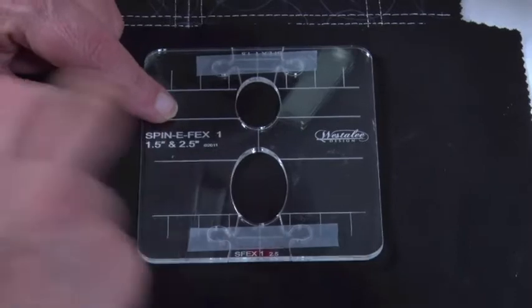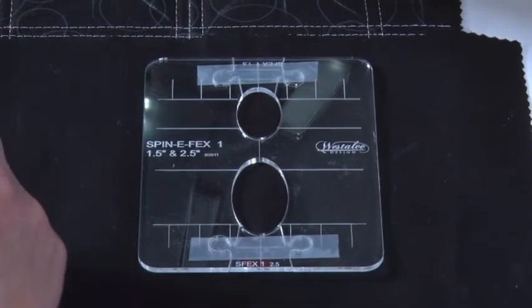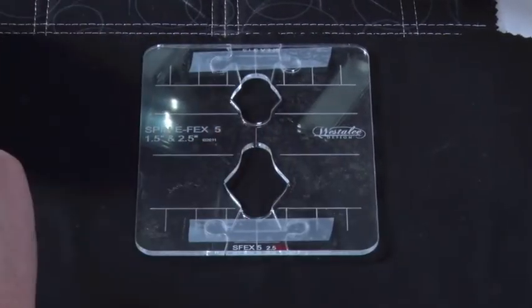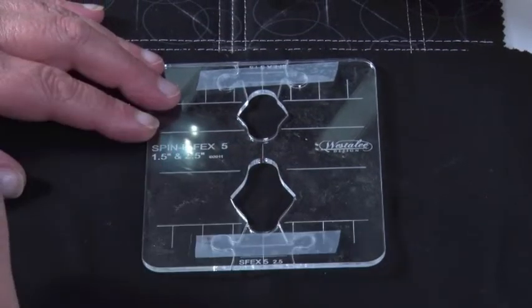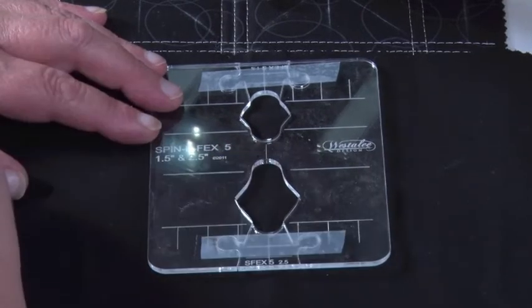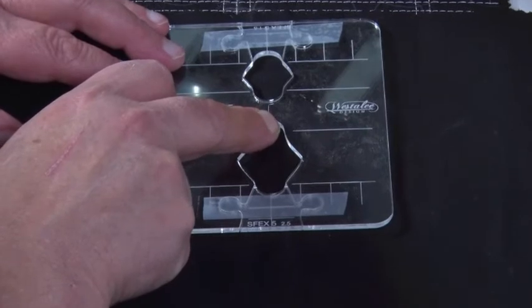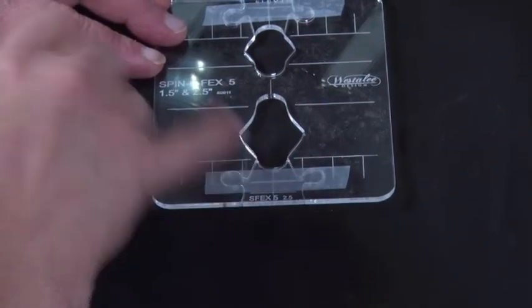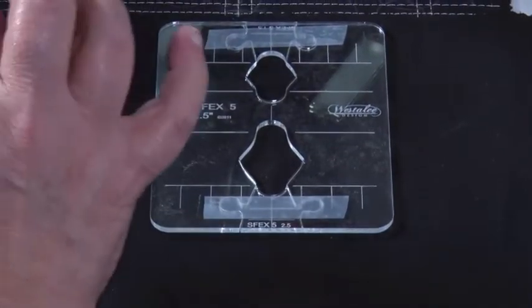This template is the same from top to bottom, but if we were using our spinifex number five, which we'll talk about later, this is a different shape from one end to the other. So we can actually use both ends of that. This is the line that we're referencing to, and this is the line at the top. We can create a pattern that works from that way and spins on this point, or we can do it spinning from this point. So this template actually gives us four different base designs.